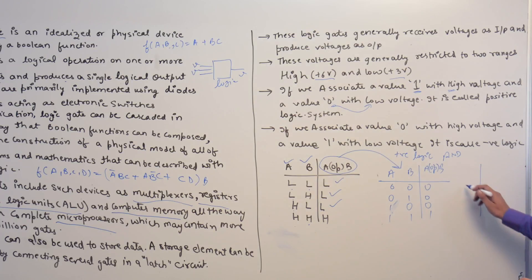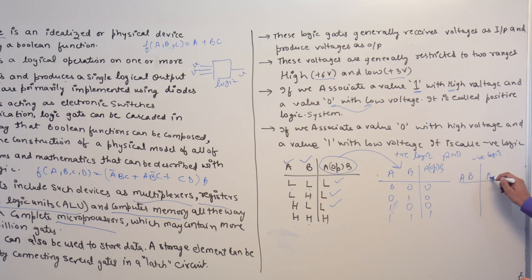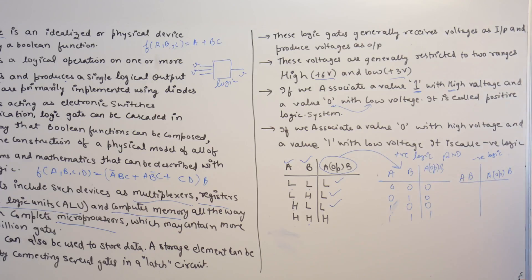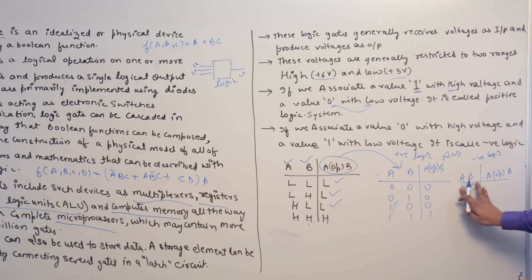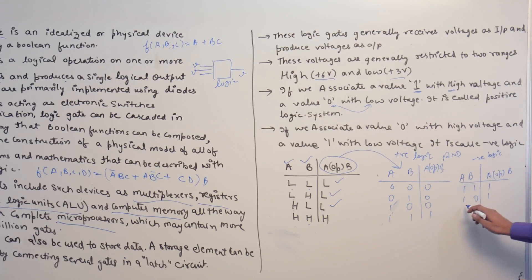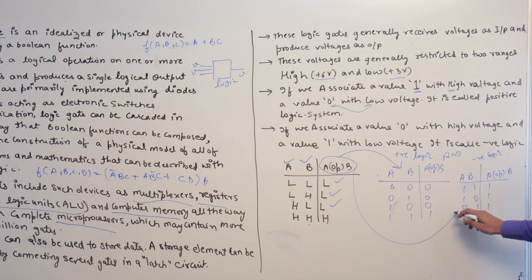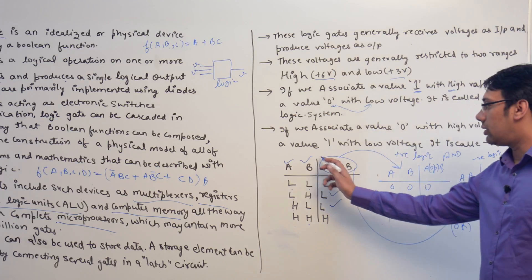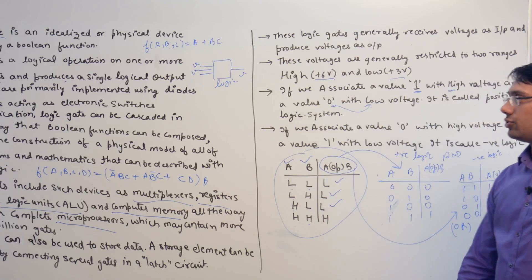In a negative logic system, we associate 1 with low voltage and 0 with high voltage. Applying the same physical operation under negative logic gives the truth table: 1,1→1; 1,0→1; 0,1→1; 0,0→0 — which corresponds to an OR gate. So the same physical circuit acts as an AND gate in positive logic and an OR gate in negative logic.